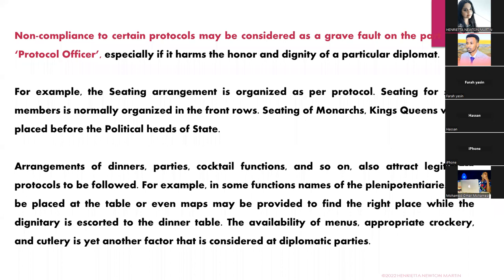For example, seating arrangements in a conference are organized as per protocols. Seating for senior members is normally in the front rows. Seating for monarchs, kings, or queens will be placed before the political heads of state. For instance, the King of England would have a seat right in front, and after him would be the Prime Minister. The political heads of state would be in the next row after the head of the particular country, depending on whether it is a kingdom, sultanate, or another form of governance.